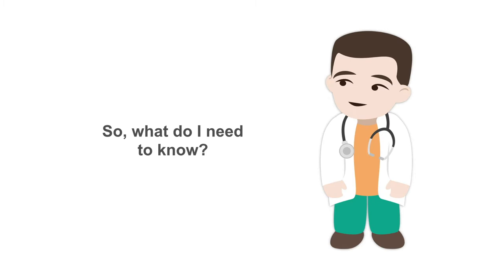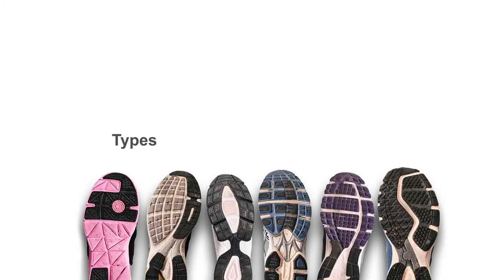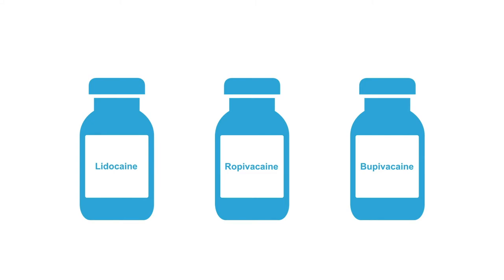What do you need to know about the wide world of local anesthetics? There are countless types. I would suggest asking your pharmacy which two or three are most available in your clinical practice and become familiar with these — forget all the rest. The most common anesthetics that we use are lidocaine, ropivacaine, and bupivacaine.